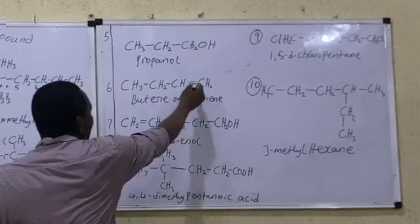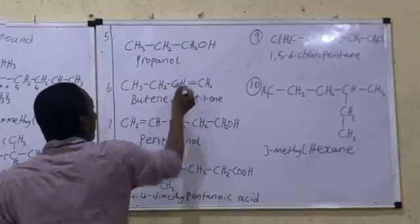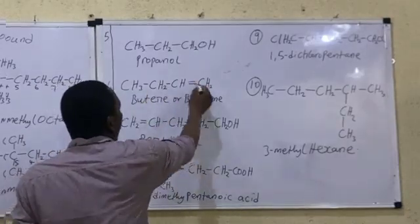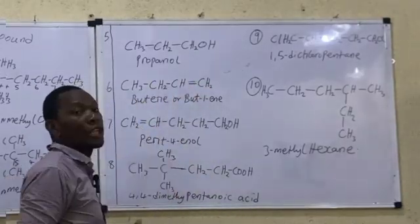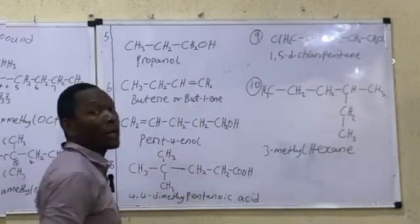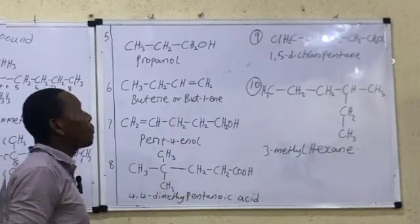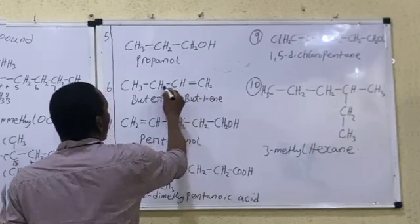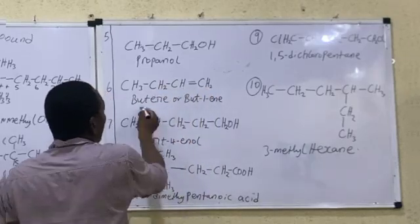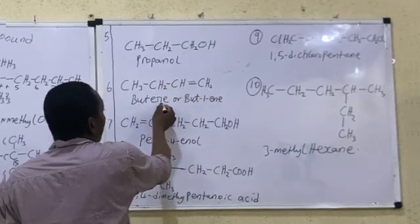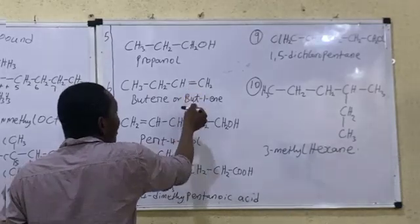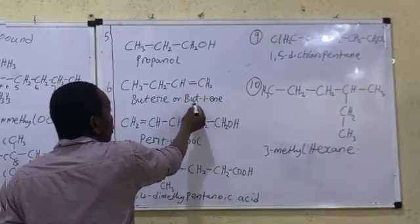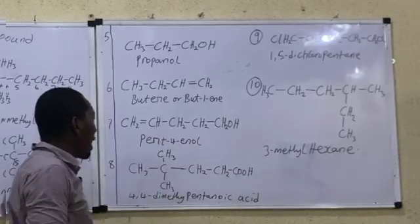The next compound also has a double bond present. Counting in both directions gives 4 carbons. We always name from the side that gives the functional group the least possible number, so we count to give the double bond the lowest number. This compound can be named as butene, but because the functional group double bond is present at carbon 1, the most appropriate name is but-1-ene.